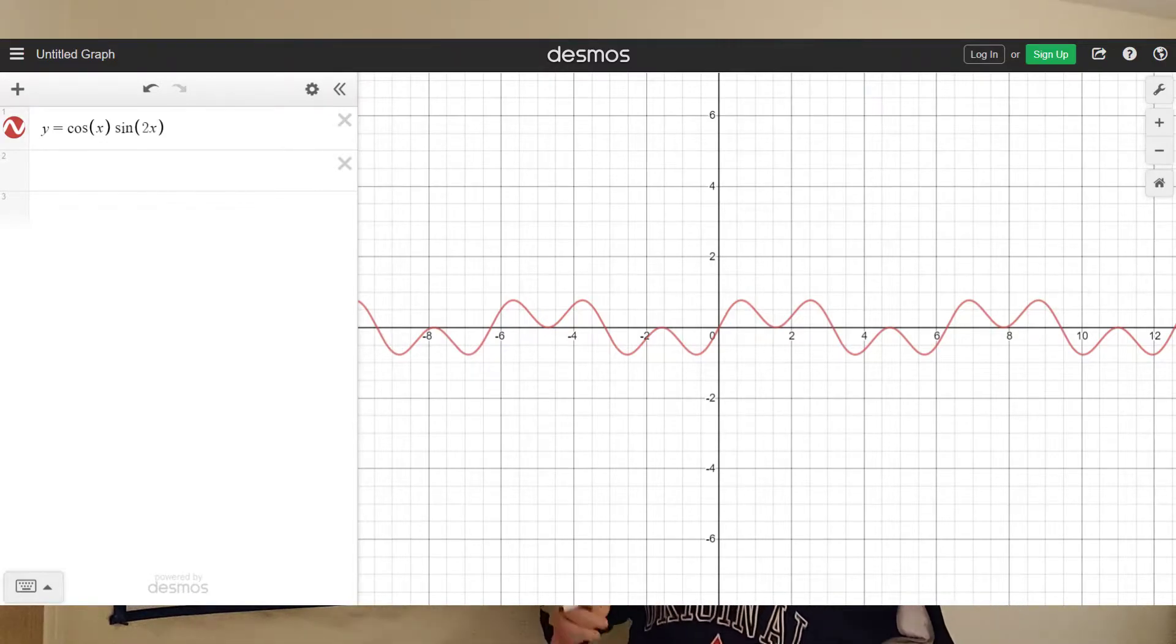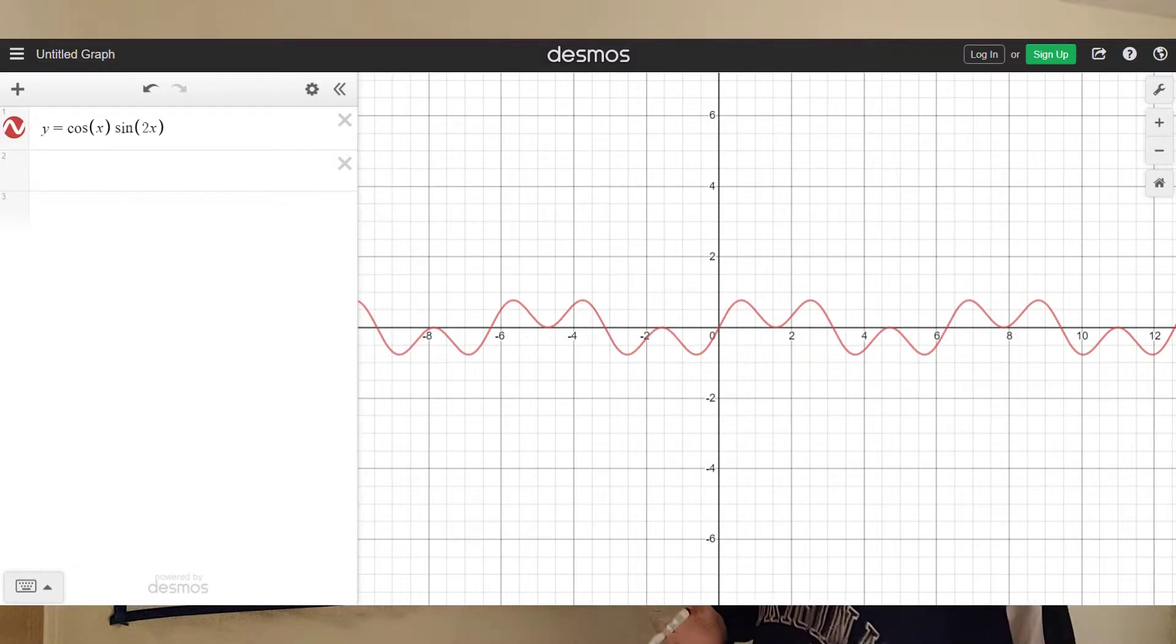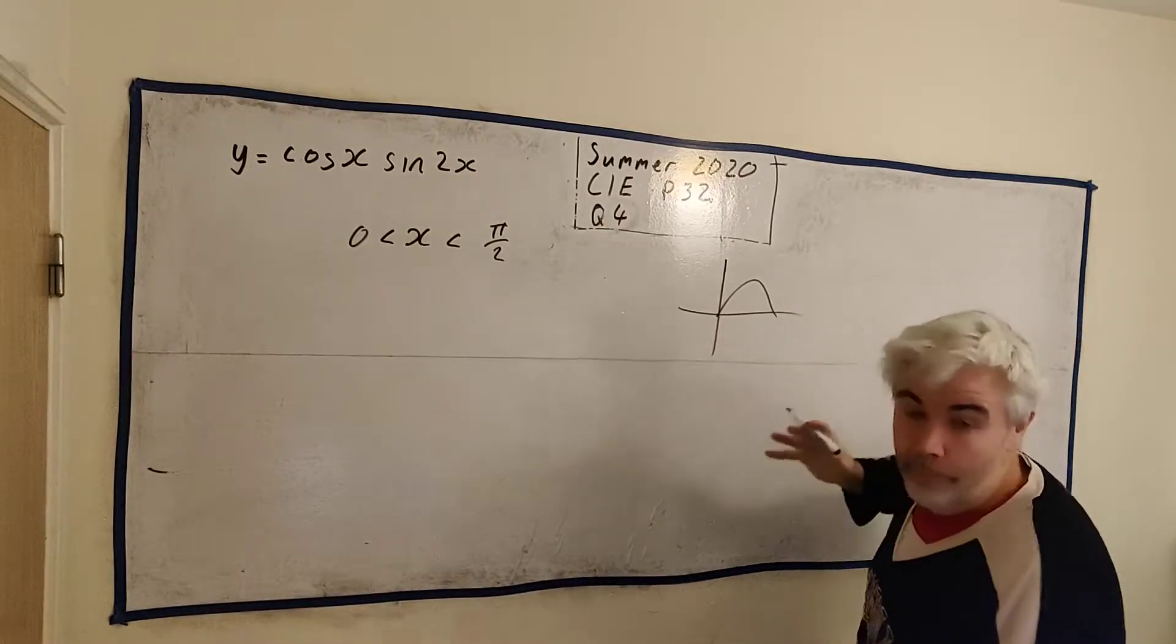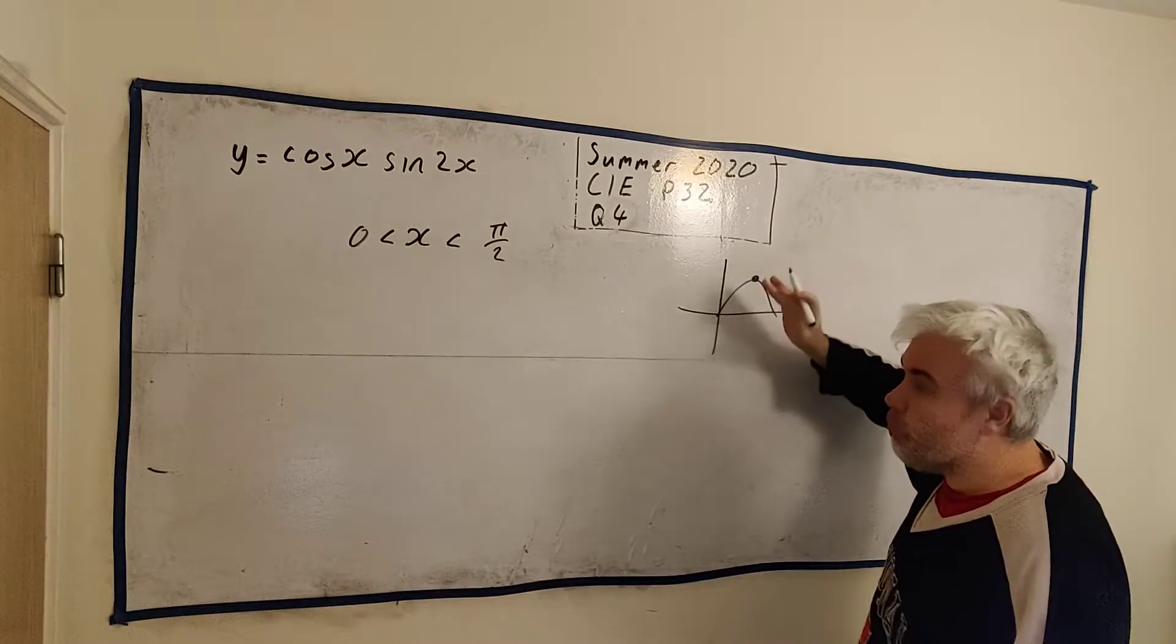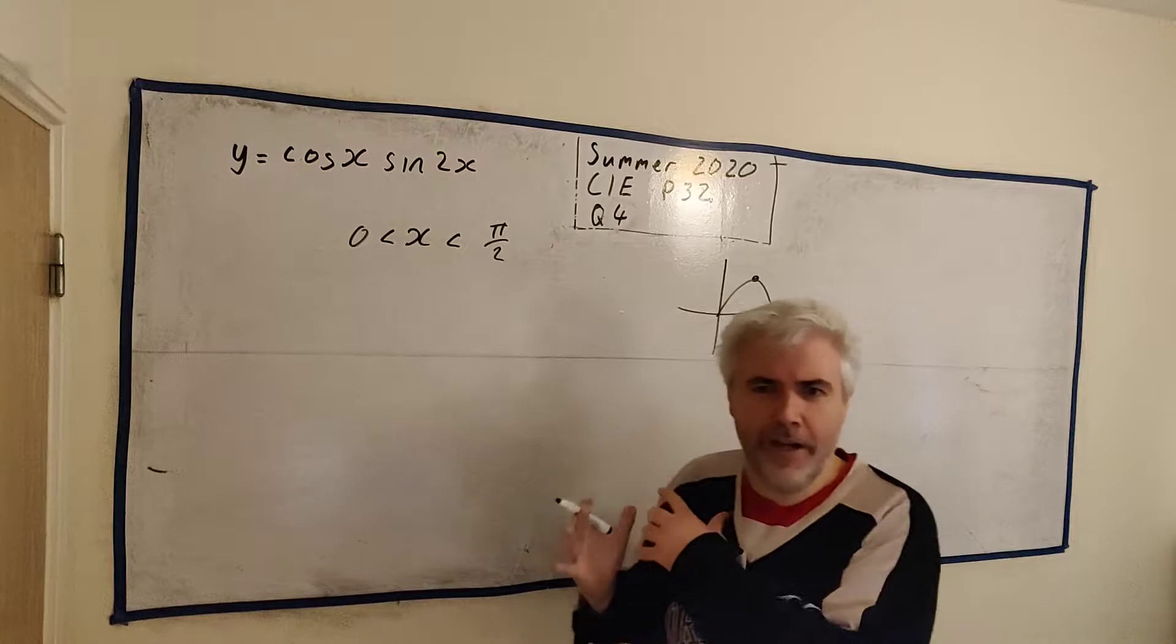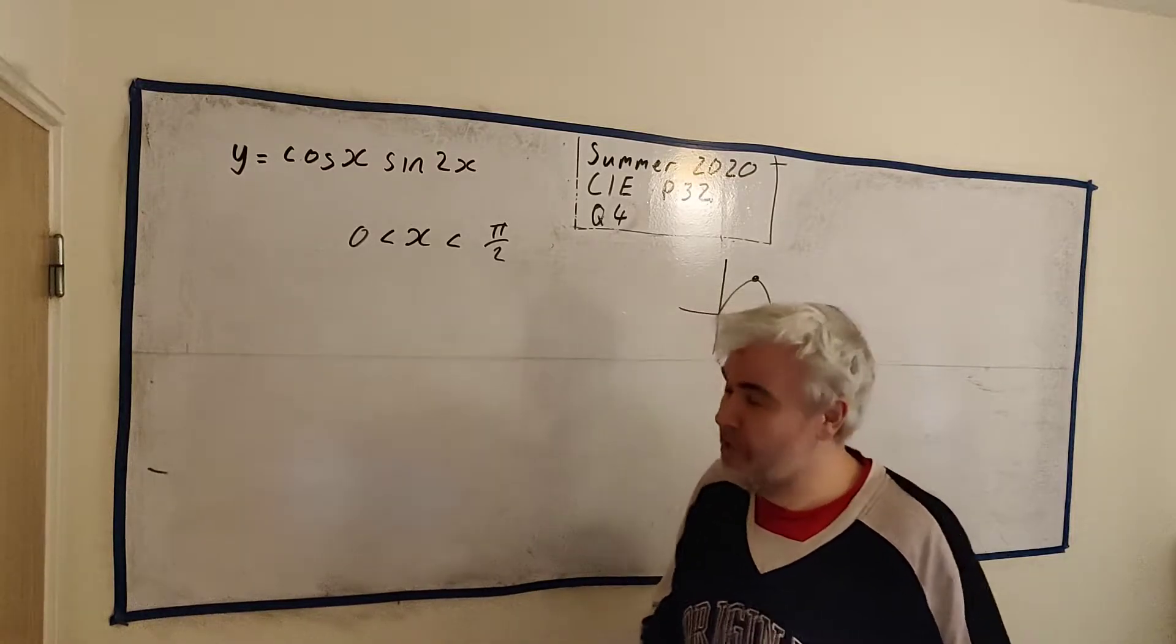What you're seeing is this equation graphed out. You can see it's very squiggly, but remember they're only asking us between 0 and a half pi, which is about 1.6. So between 0 and 1.6. Let's bring you back to the main screen now, that means between there there's just one hump pretty much. So we're looking for this one stationary point.